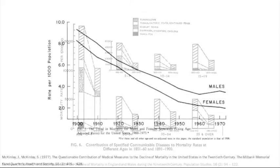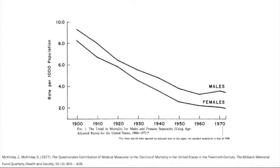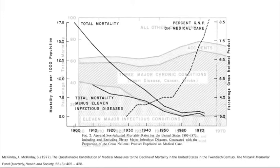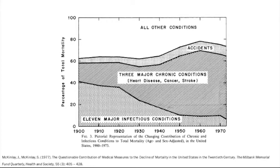Other medical historians also found similar trends for the United States, with demographic data from the start of the 20th century till the 1970s. McKinley and McKinley, in their study 'The Questionable Contribution of Medical Measures to the Decline in Mortality in the United States in the 20th Century,' published in 1977, also observed a sustained decrease in mortality rate for both sexes, from around 9 deaths per 1,000 population in the 1900s to 3 deaths per 1,000 population in the 1970s. They also concluded that the decrease in mortality rates was associated with a decrease in death due to infectious diseases, and noted an increase in the relative importance of cardiovascular diseases and cancer.